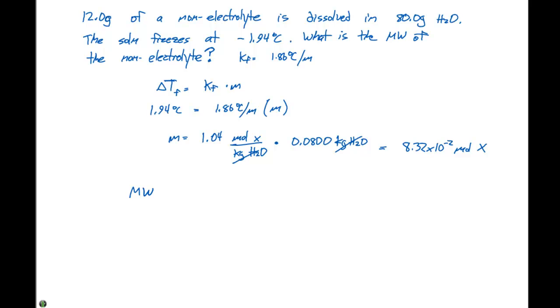Remember that molecular weight is equal to grams per mole, or has units of grams per mole. Here we start with 12.0 grams of our non-electrolyte. We know that we have 8.32 times 10 to the minus 2 moles. If we divide that, we get 144 grams per mole for our molecular weight of our electrolyte solution.